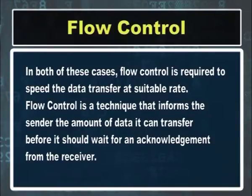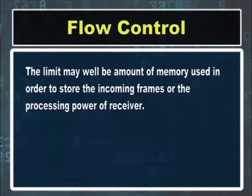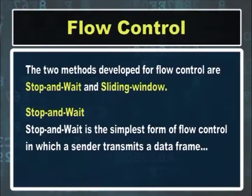Flow control is a technique that informs the sender the amount of data it can transfer before it should wait for an acknowledgement from the receiver. The flow of data from sender to receiver should not overburden the receiver. The receiver must also be able to report to the transmitter before its limits are reached, and the sender should send fewer frames. The limit may be the amount of memory used to store incoming frames or the processing power of the receiver. The two methods developed for flow control are stop-and-wait and sliding window.